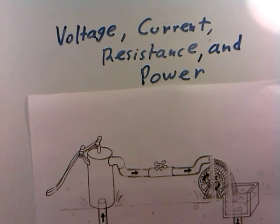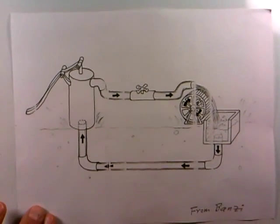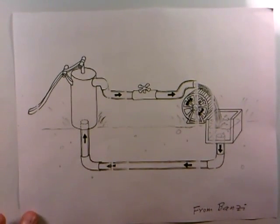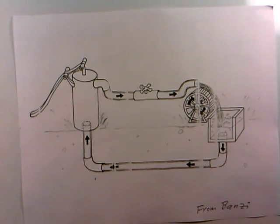So let me introduce the quantities by way of analogy here. One of the most common ways of doing this, I'm borrowing this diagram here from a book by Banzi, the inventor of the Arduino. A very good way of understanding these three quantities and why they're different is to use a water pump analogy like this here.